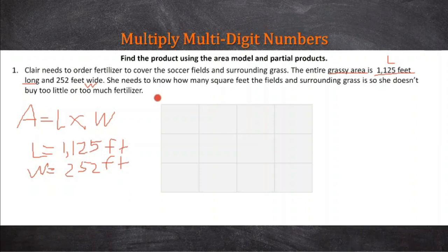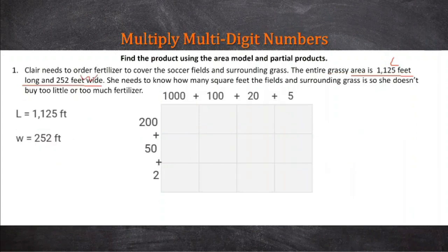According to the area model, we're going to put 1,000 here because we're breaking up the whole number 1,125 feet into their terms for their place value. So that's 1,000, this is 100, 20 and 5, just like if you're adding them up. And then for my width, it's 252, so it's 200 plus 50 plus 2.